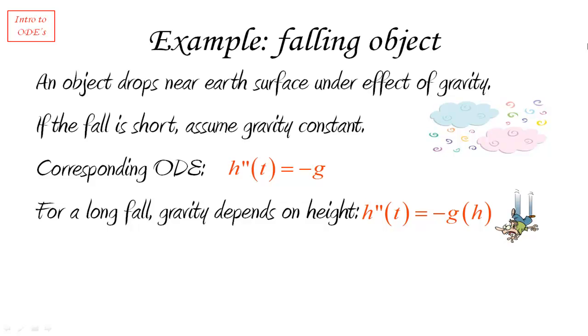We have a differential equation of second order because it involves a second derivative. What we're looking for is the function h. What we know about the function h is only that its second derivative equals minus the gravity estimated at whatever height we're looking at.